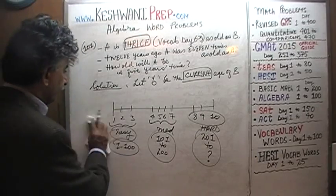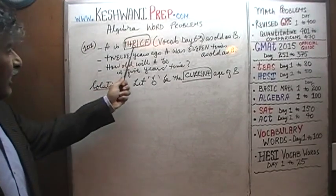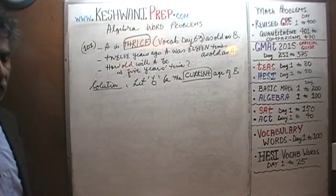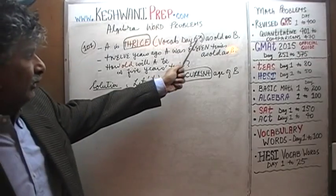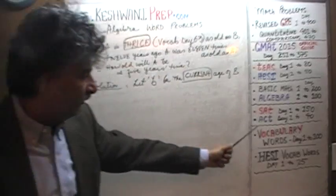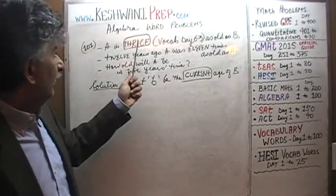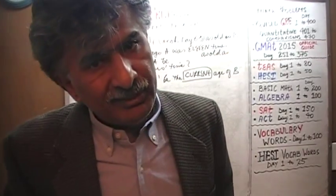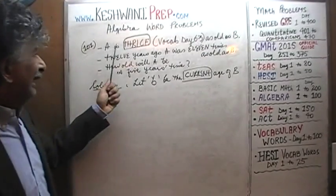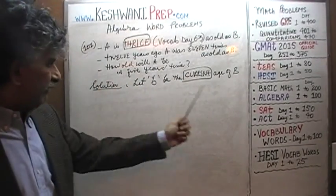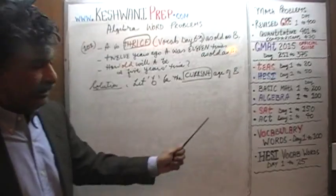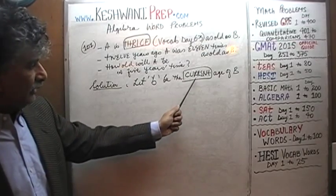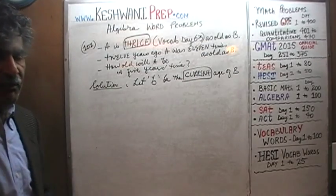We are told that A is thrice as old as B. As we learned on day 63 in our vocabulary lessons, 'thrice' is a fancy way of saying three times as much. So A is three times as old as B. Let B — small letter b — be the current age of B. It is very important, which is why I put a box around it, that you specify the time period very clearly when you define your variables.